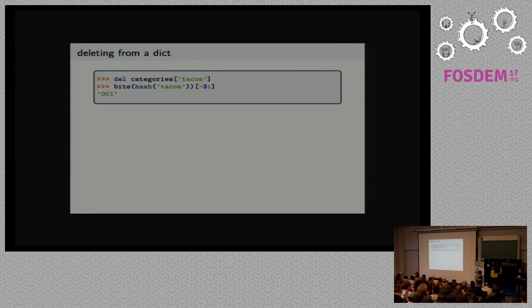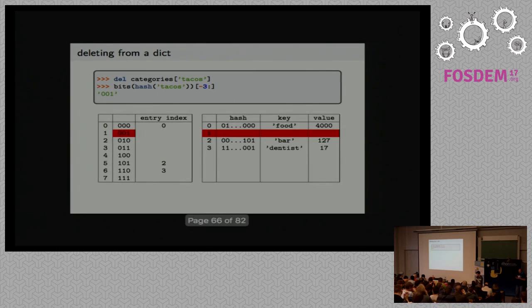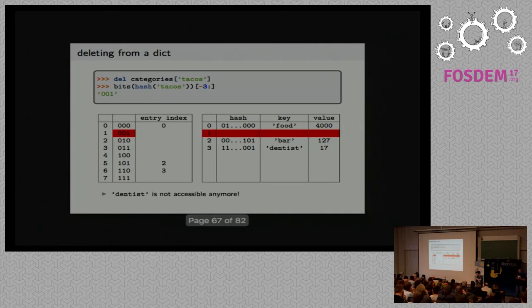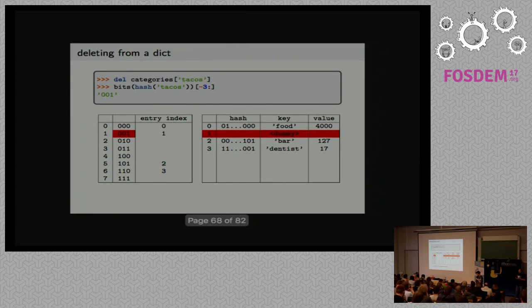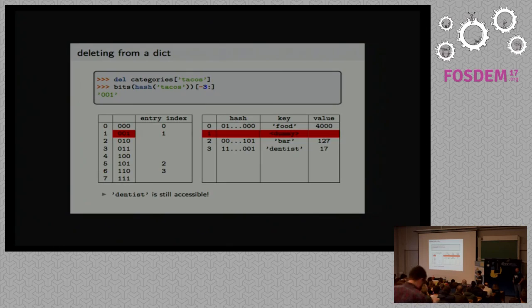Next, what if we want to delete an item from a dictionary? Let's say we want to remove tacos. Its hash is 0, 0, 1. Can we just remove the entry index and remove the content in the entries table? Actually, we can't, because otherwise we couldn't access dentist anymore. When we inserted dentist, we jumped from tacos's slot. So if there's no tacos entry index there, we can't find dentist. To solve this, instead of removing the entry index, we keep the entry index, remove the content in the entry, and just leave a dummy key. The dummy key is here to say: there used to be something here, it's not there anymore, so if you stumble upon me, just keep jumping. We can still access dentist.